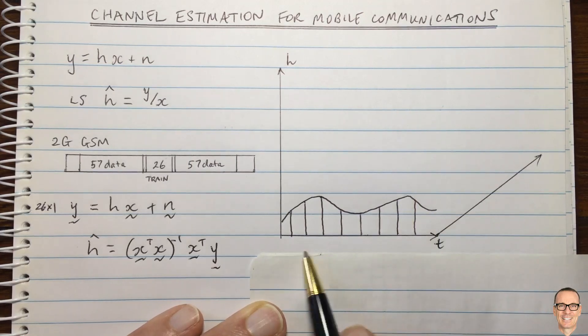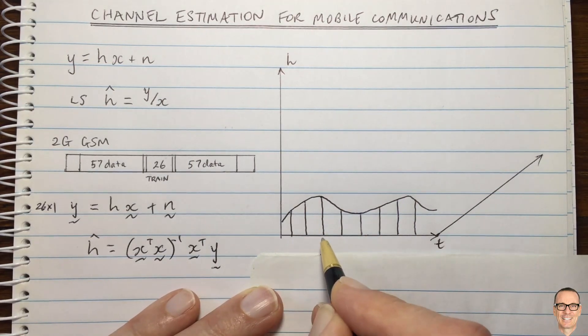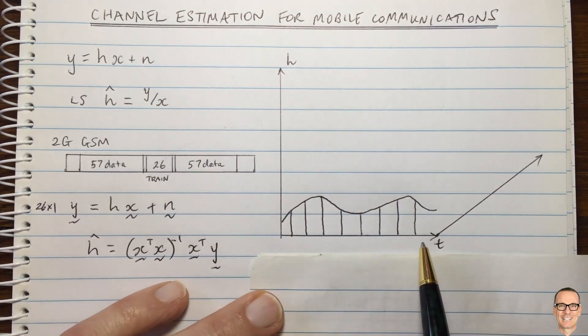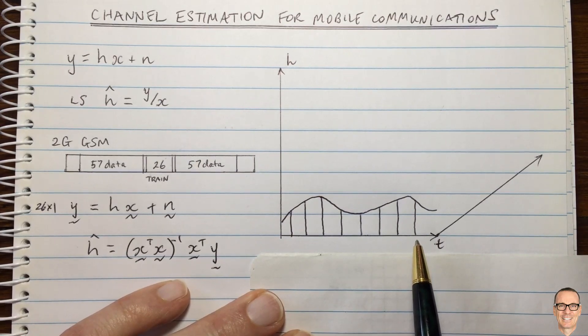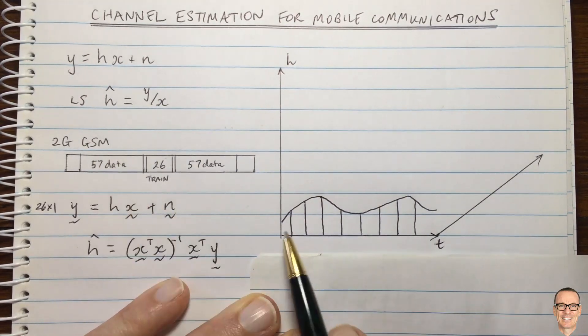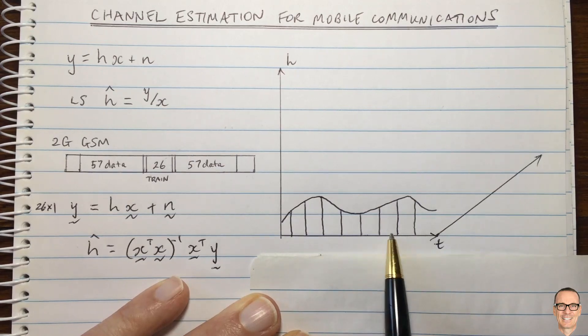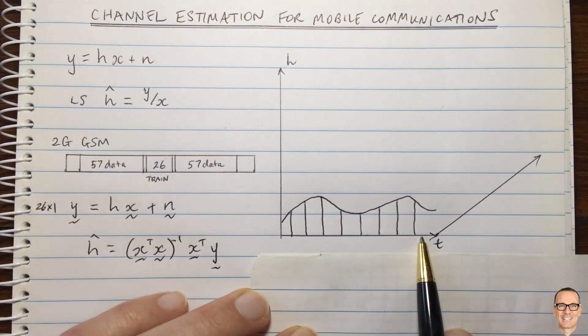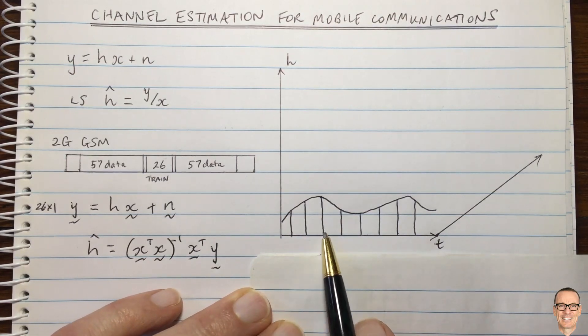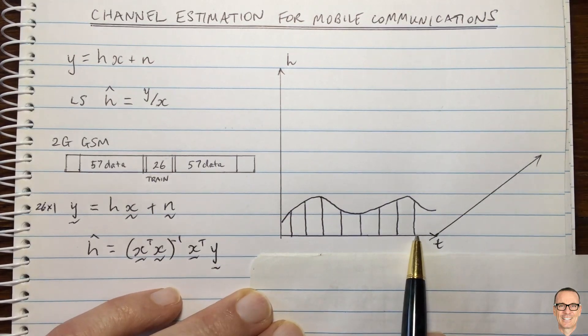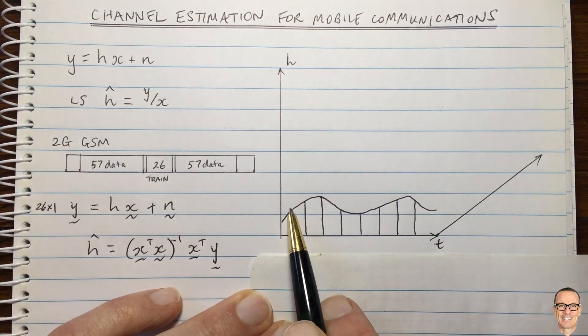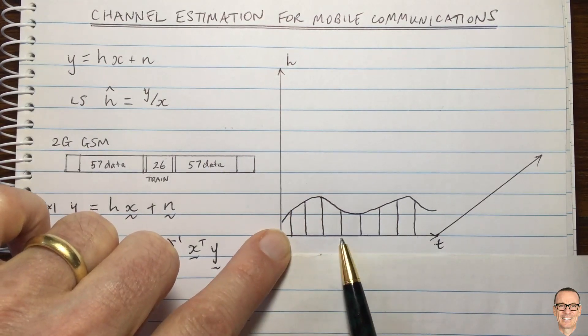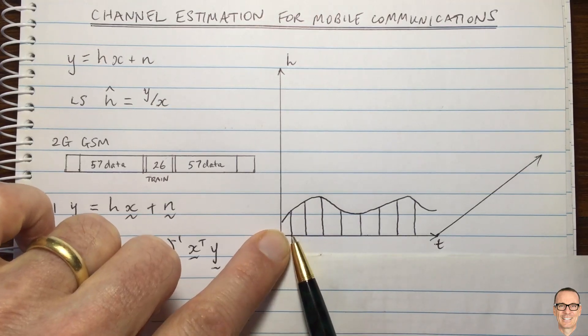Now we can see as time evolves and the channel changes with time, we can send training at a regular interval. We can send data in between there and now we can see that it becomes a sampling problem with interpolation. You could view this in GSM as one packet after another or in a more general ongoing continuous transmission situation with a longer packet. You could be interspersing your training data at regular intervals throughout that longer packet.